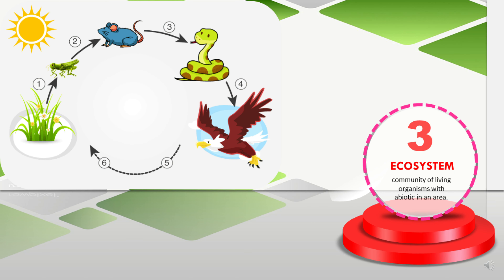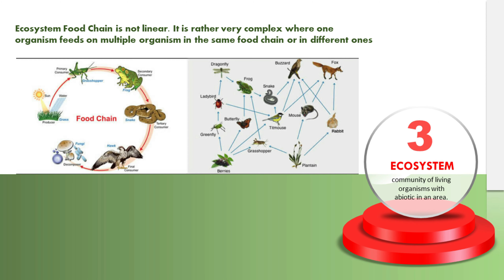In an ecosystem, there is energy flow. Plants get light, make food, and then consumers feed on them. Decomposers further depend on them for survival. From the sound of it, it looks like a simple food chain, and of course there is a food chain in the ecosystem. But in an ecosystem, the food chain does not follow a linear pattern — an organism may feed upon more than one organism in the same food chain or upon organisms of different food chains as well.